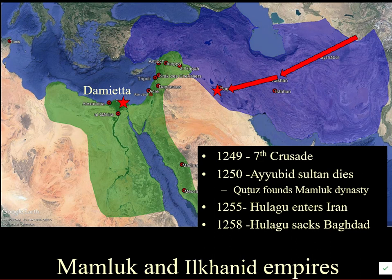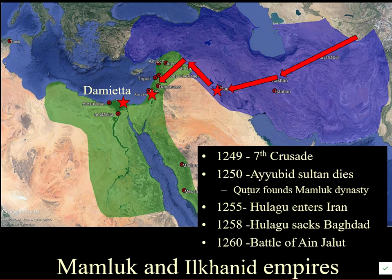The Mongols did not stop there. They carried on and invaded Syria, sacking Aleppo, Hama, Damascus, and other places, destroying Raqqa — remember Raqqa, the important pottery production center — which was completely destroyed and was never a town again until recent times. Then at the Battle of Ain Jalut, the Ilkhanid Mongols were defeated by the Mamluks.